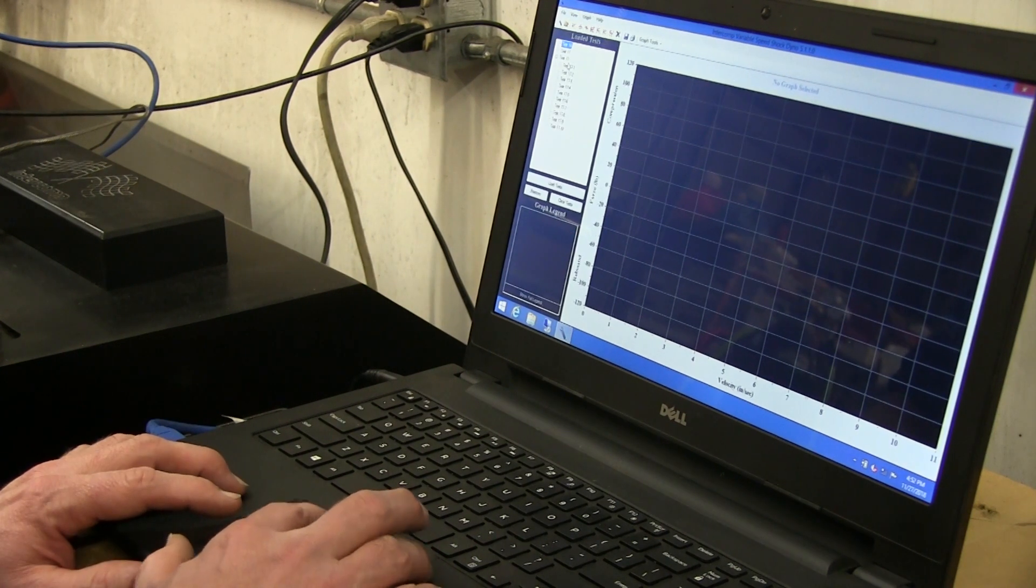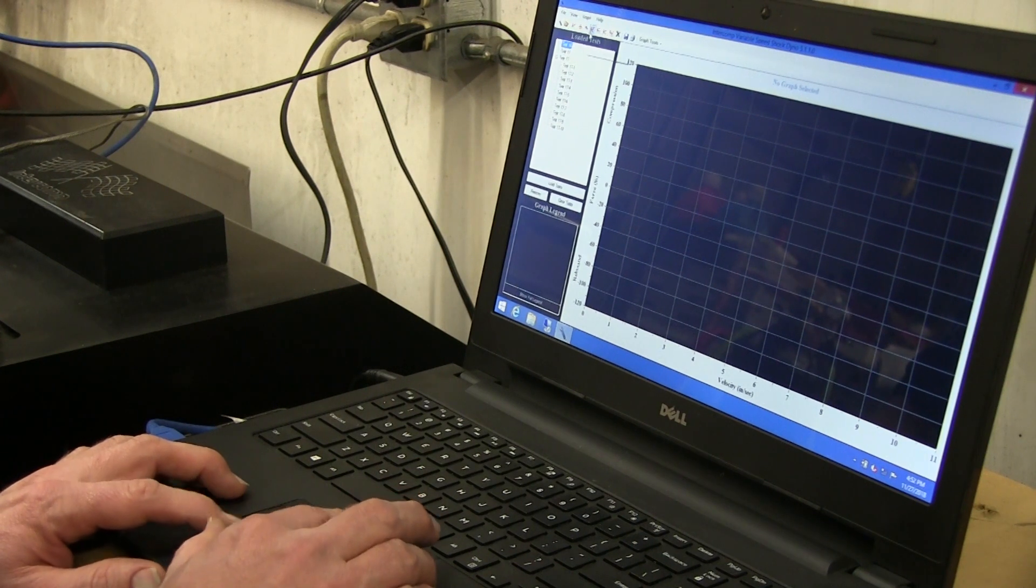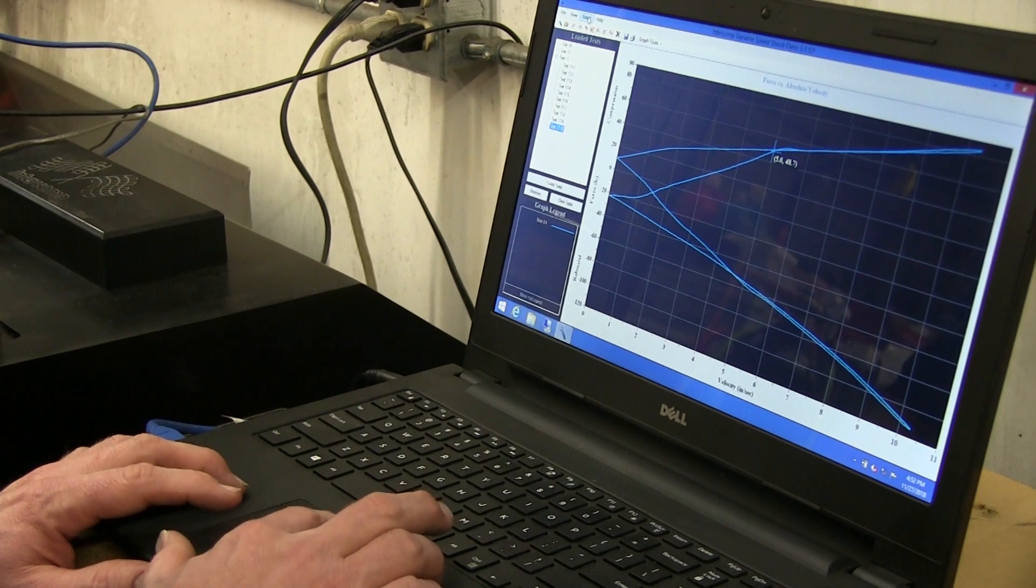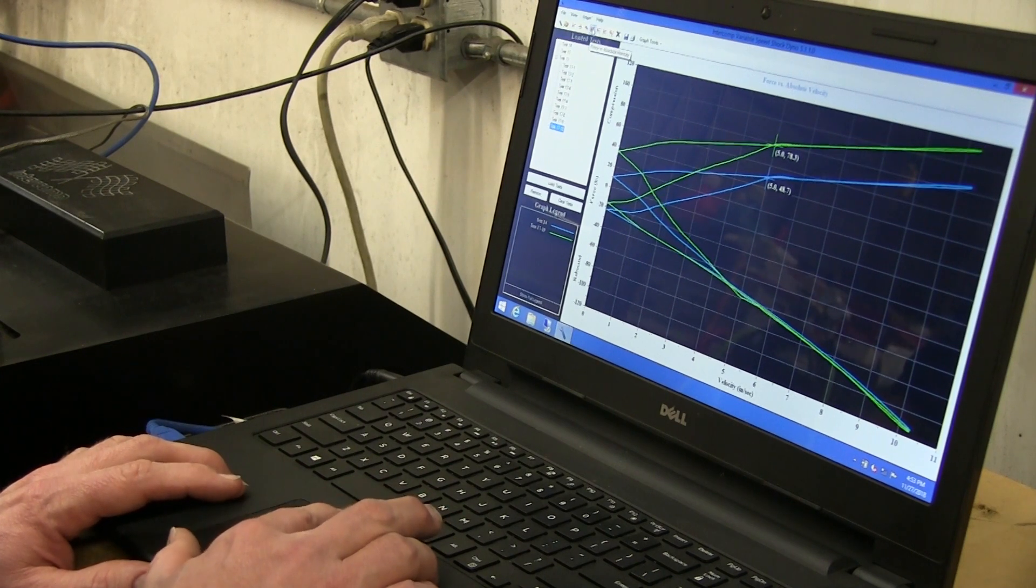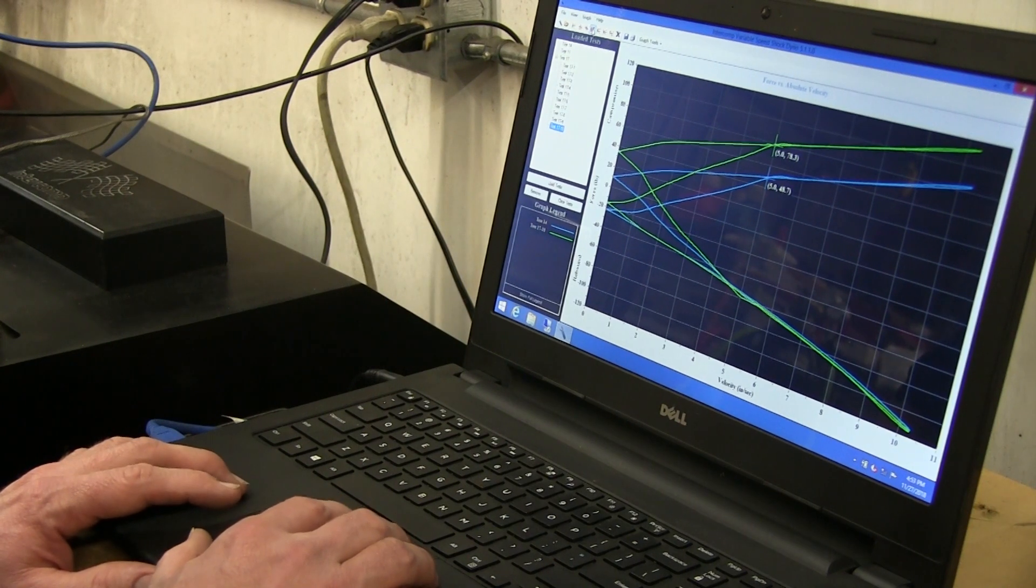I've got a couple of different tests loaded over here in the data bank and I'm just going to compare one run to the other. Click on one, click on the other. And that's just going to show me some differentiation whether I've made adjustments to the shock or whether I'm just trying to check if a shock is still good or not.